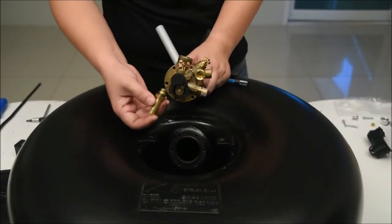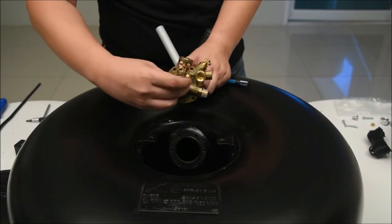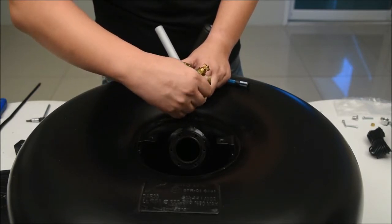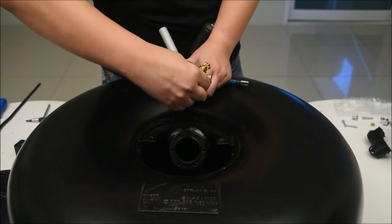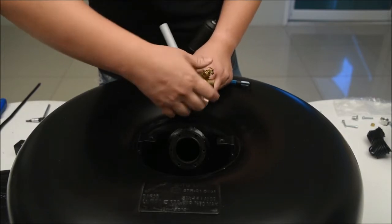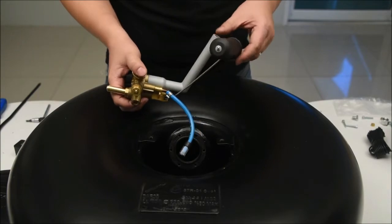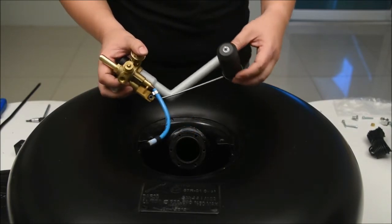Now let's see how to assemble the multivalve to LPG tank. First of all disassemble the coil and plunger from multivalve and check the plunger is working properly. Now install the plunger back to multivalve but do not install the coil yet.